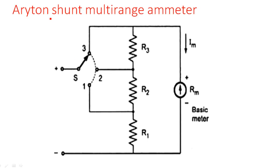We are going to see the R8N shunt multirange ammeter. In the previous lecture, we have seen a shunt type multirange ammeter. Shunt type means where the resistors are connected individually for every range — one particular resistor for I1 range and one particular resistor for I2 range.